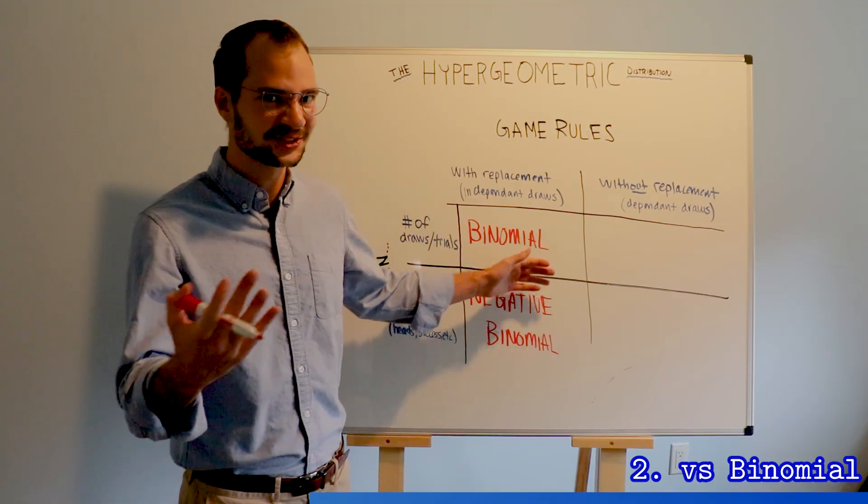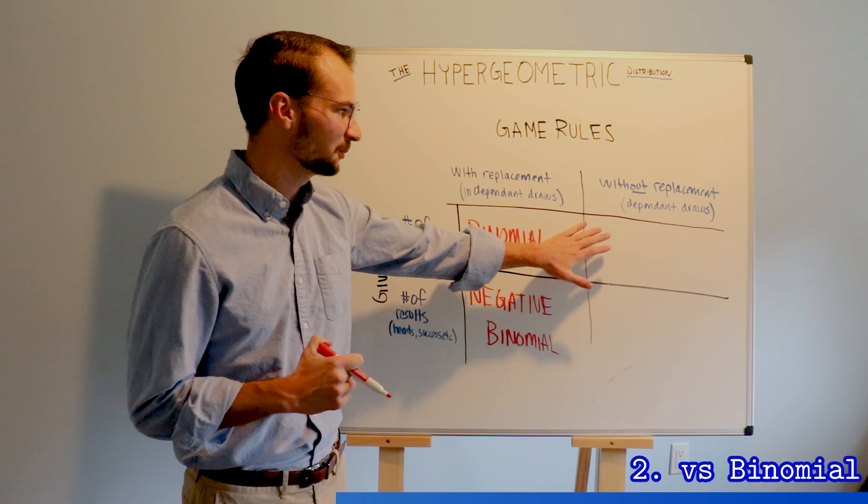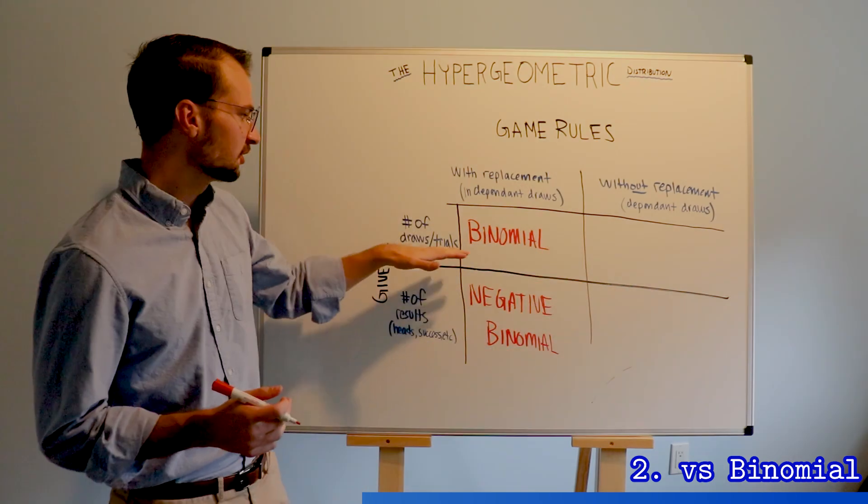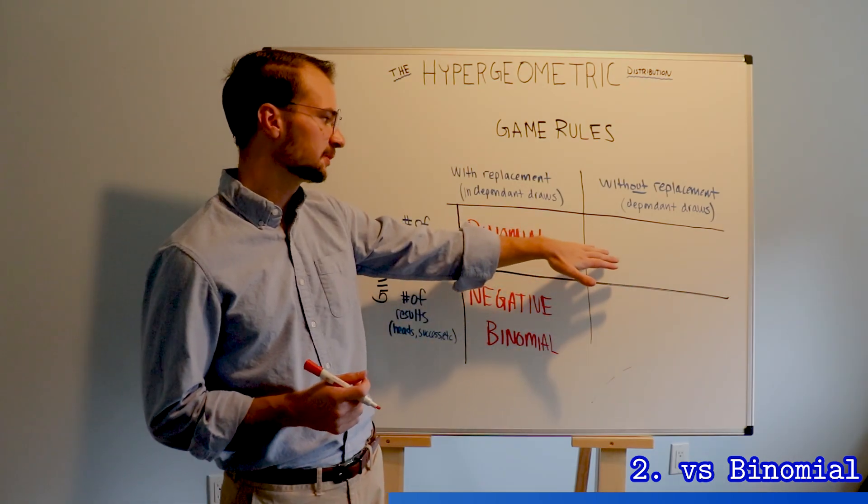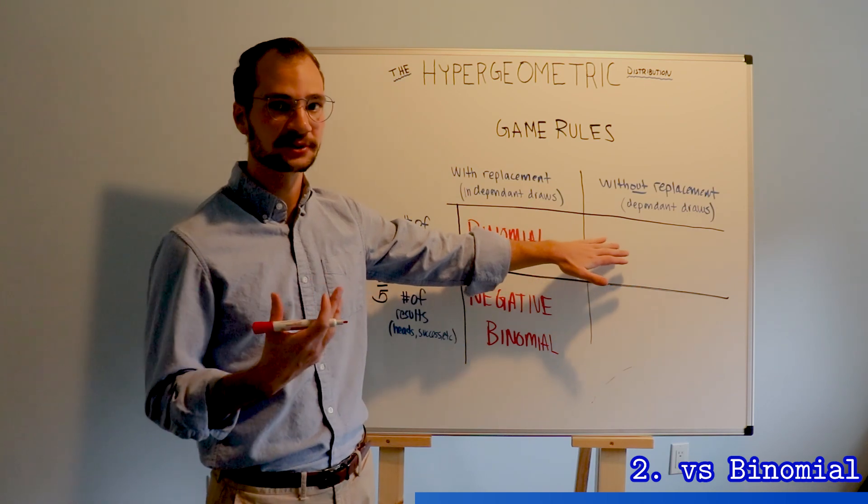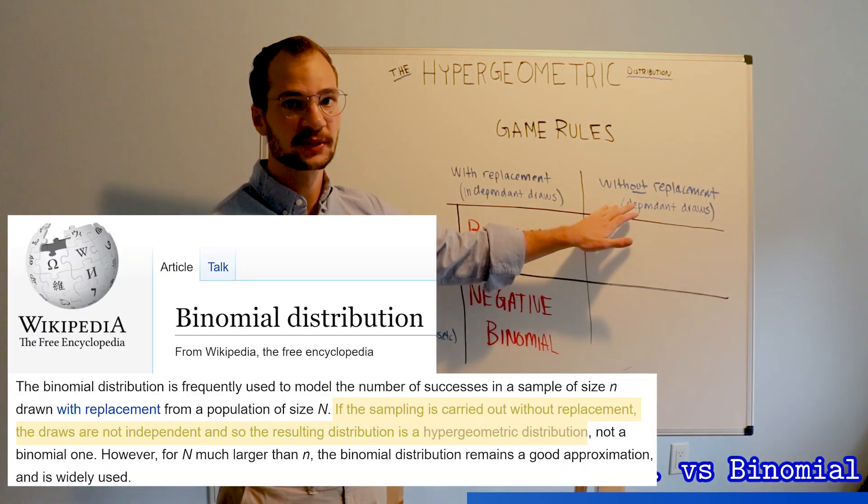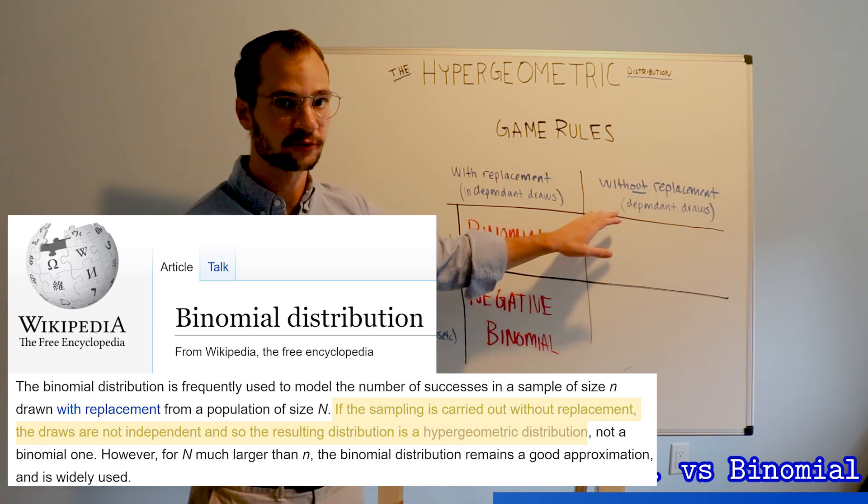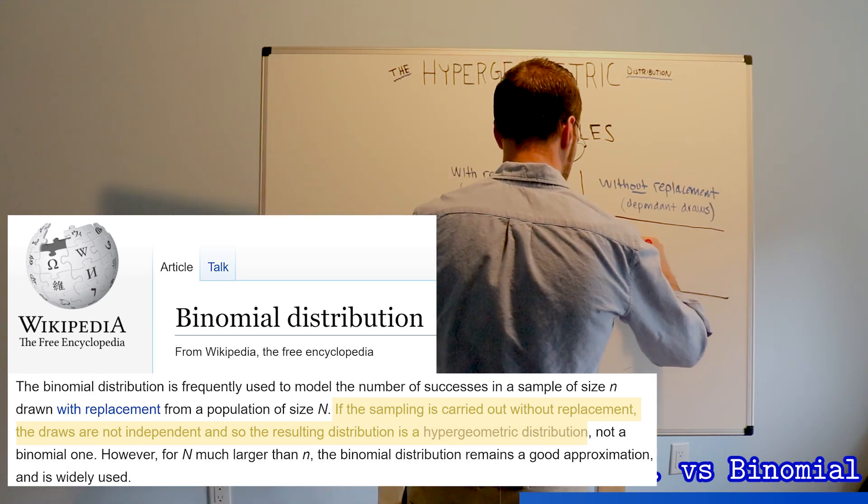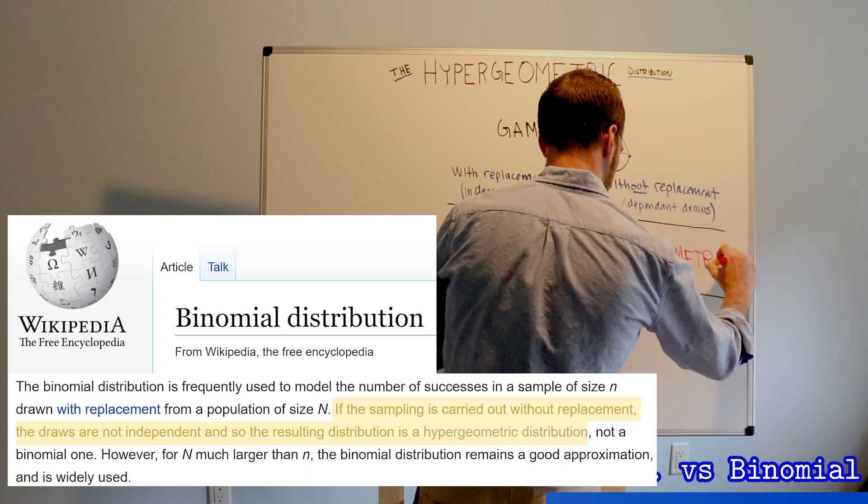Now for the good part, since this is a video about hypergeometric, you might be able to fill in the blank already. The difference between binomial and hypergeometric is that in a hypergeometric we don't replace the objects back into the urn. This makes it a little bit more complicated of a formula and that's why we learn binomial before we even talk about hypergeometric.